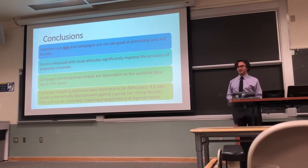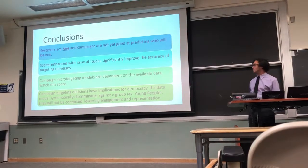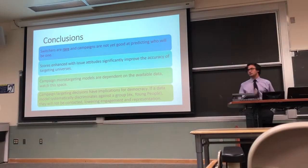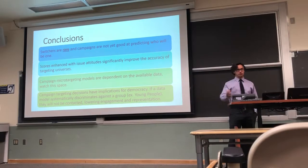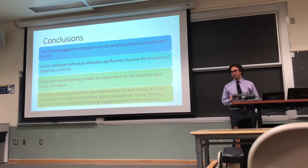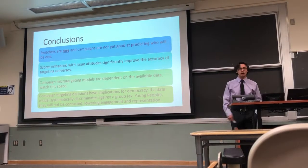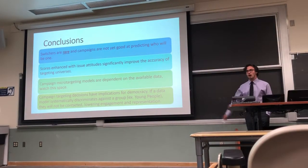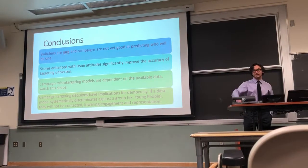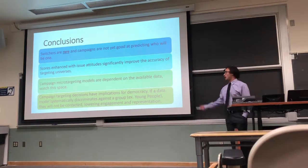A few conclusions. First, switchers are rare and campaigns are not great at finding them. Second, scores enhanced with issue attitudes do get us better at predicting partisanship and thus finding switchers — they improve the accuracy of the targeting universe. Third, campaign micro-targeting models are dependent on available data — watch this space. When you're thinking about privacy laws being debated, or when government wants to change what information goes on your voter registration form, people making those laws may benefit from having more data on you in order to better target you. These campaign targeting decisions matter because they have implications for democracy. If your data model systematically discriminates against young people or any other group, they're less likely to be reached out to, less likely to be engaged, less likely to vote, less likely to be represented — and that has implications for legislation and democratic governance. That's why this is important.